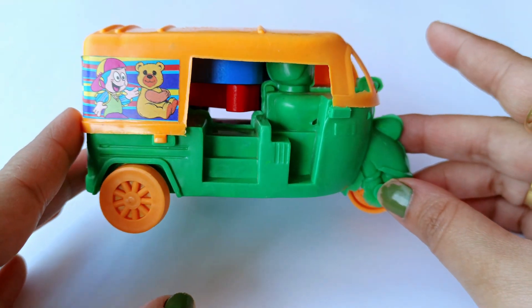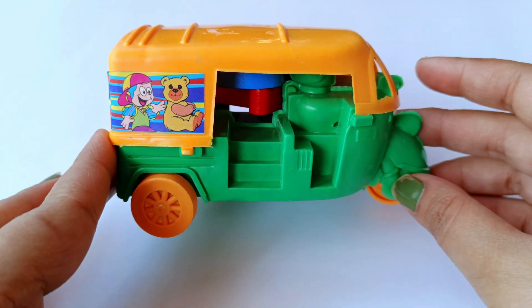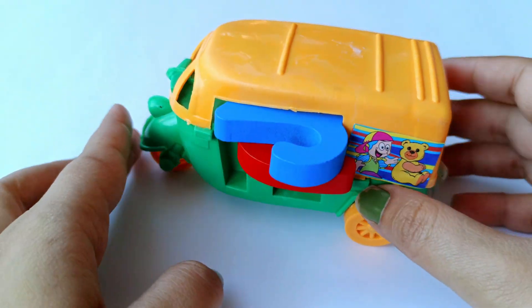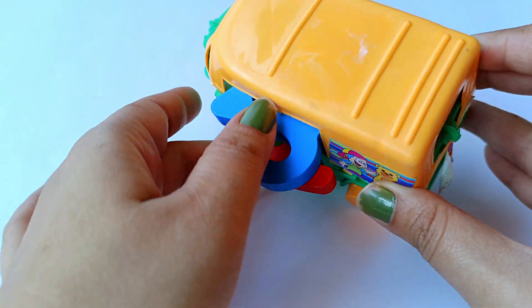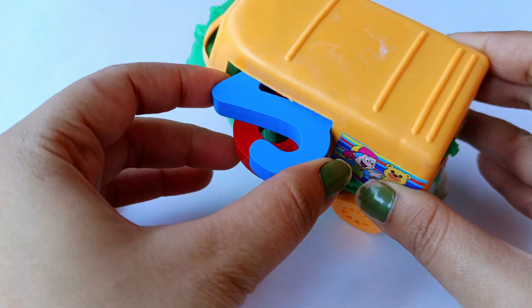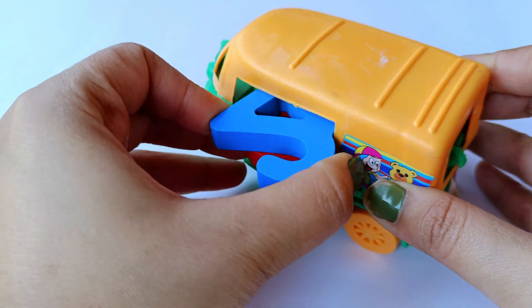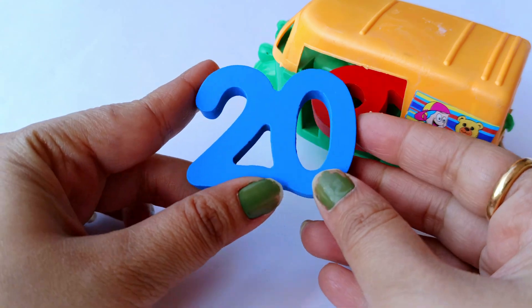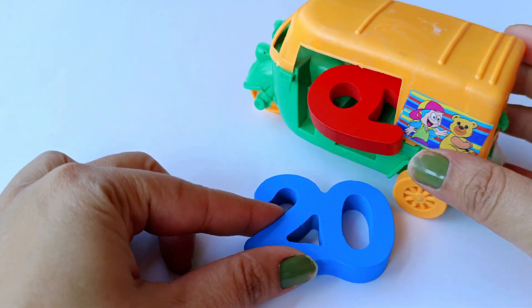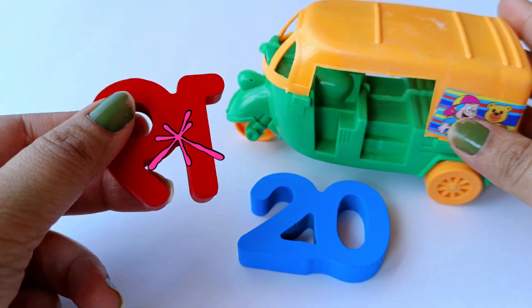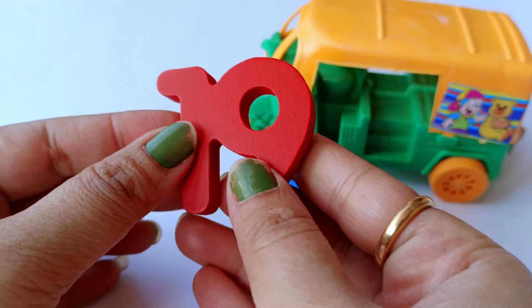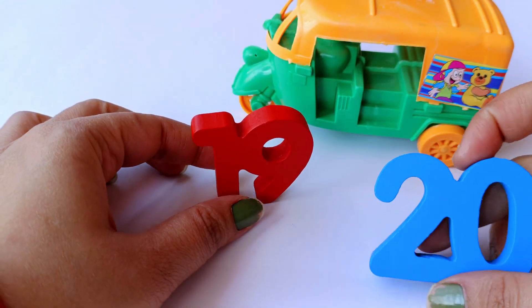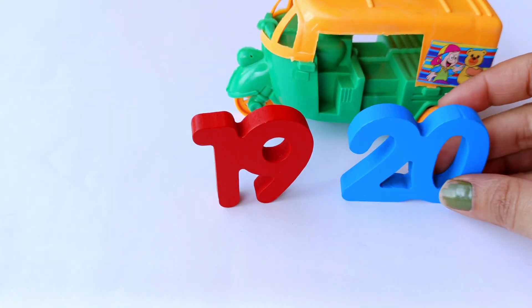See, it's mini auto rickshaw. And it has brought numbers for you. Let's see the numbers. So, it's number 20. It's blue in colour. And it's 19. Its colour is red. So, we got number 19 and number 20.